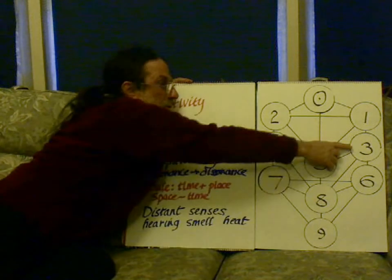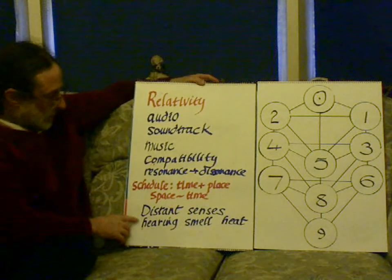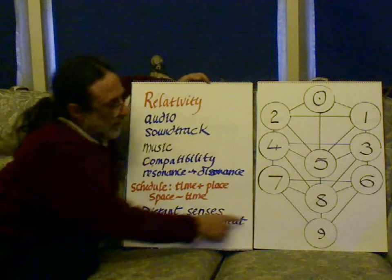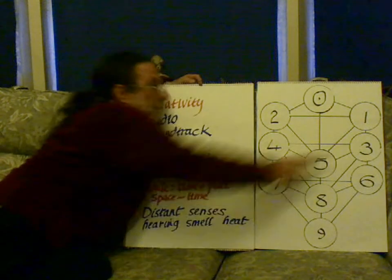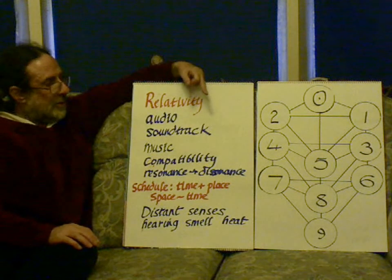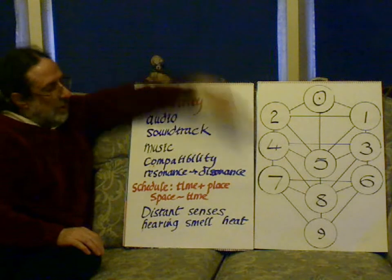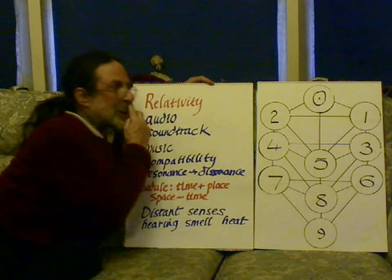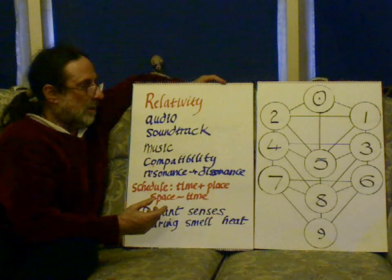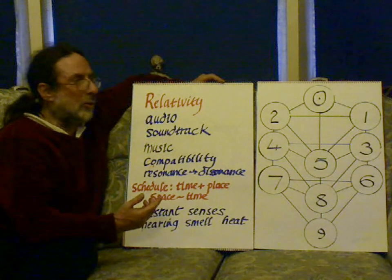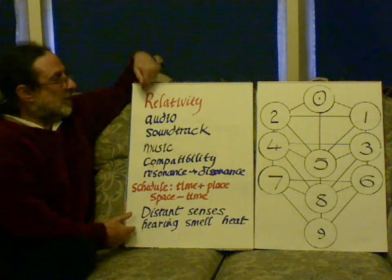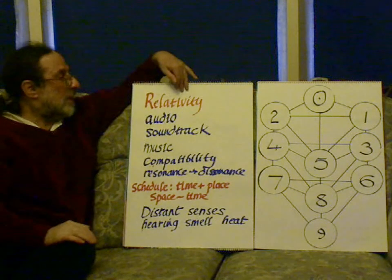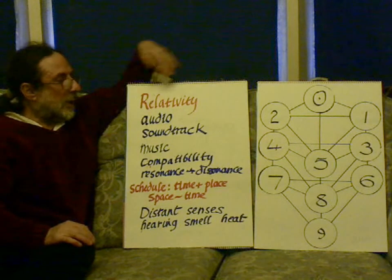The second level, from eight to three to four, these are the distant senses — hearing, smell, and heat. The sensitivity to heat, hearing, and smell. We smell the space, we can hear the time. And then we can feel the heat from a distance. We can smell from a distance. We can form a small map of the area from a distance. Elephants have a great ability to do this. Now this is the level of relativity, of three to four — the space, the time, general relativity, space-time. Which is the audio, the soundtrack to our lives.